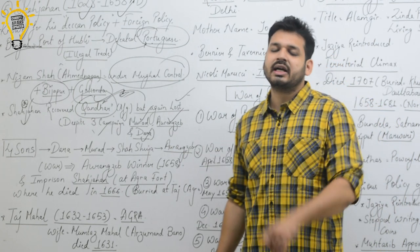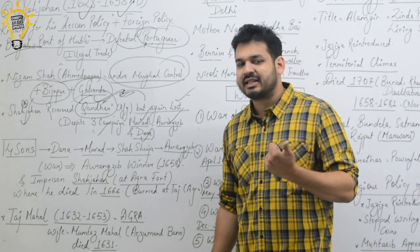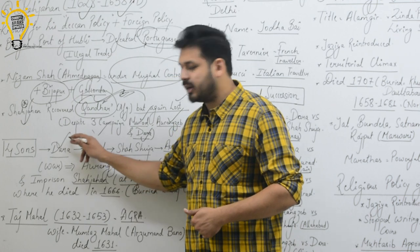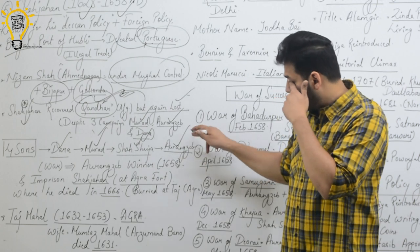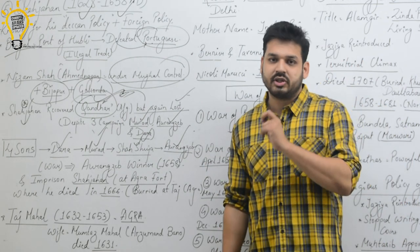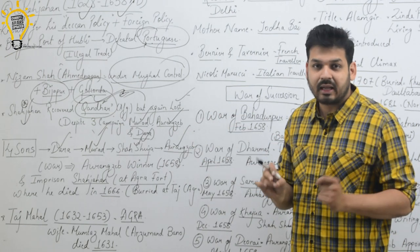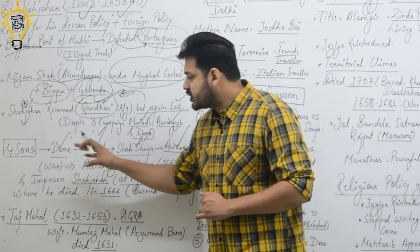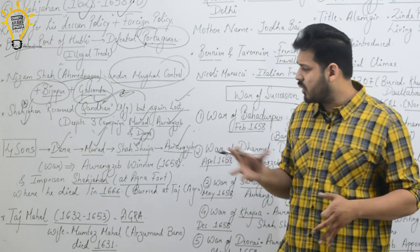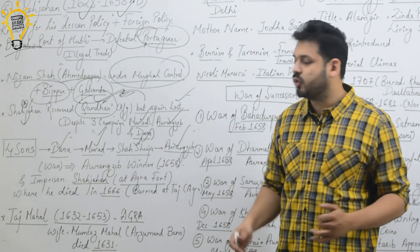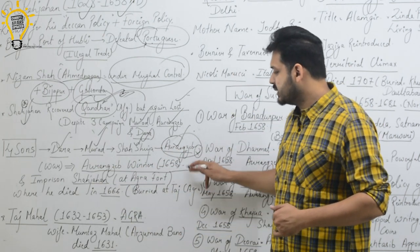Shah Jahan had four sons, always remember their names. One is Dara, the second is Murad, the third is Shah Shuja, and the fourth is the most important one, the next ruler Aurangzeb. Among the four, there will be a war of succession. Everyone wants to become the emperor. The war of succession will have victory in the hands of Aurangzeb, who is the winner in 1658.